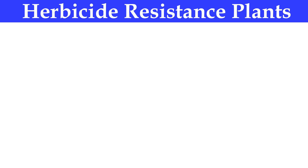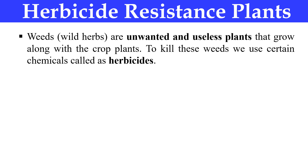Now it should be clear to us what herbicides are. Weeds are unwanted and useless plants that grow along with our crop. These unwanted plants take the nutrients required by the crop, competing for nutrients, light, and other factors. Due to these weeds, our crop gets very low nutrition and there is damage to the crop. To protect our crop from these weeds, we use certain chemicals called herbicides. Herbicides are simply those chemicals that kill unwanted and useless plants, which are also called weeds.